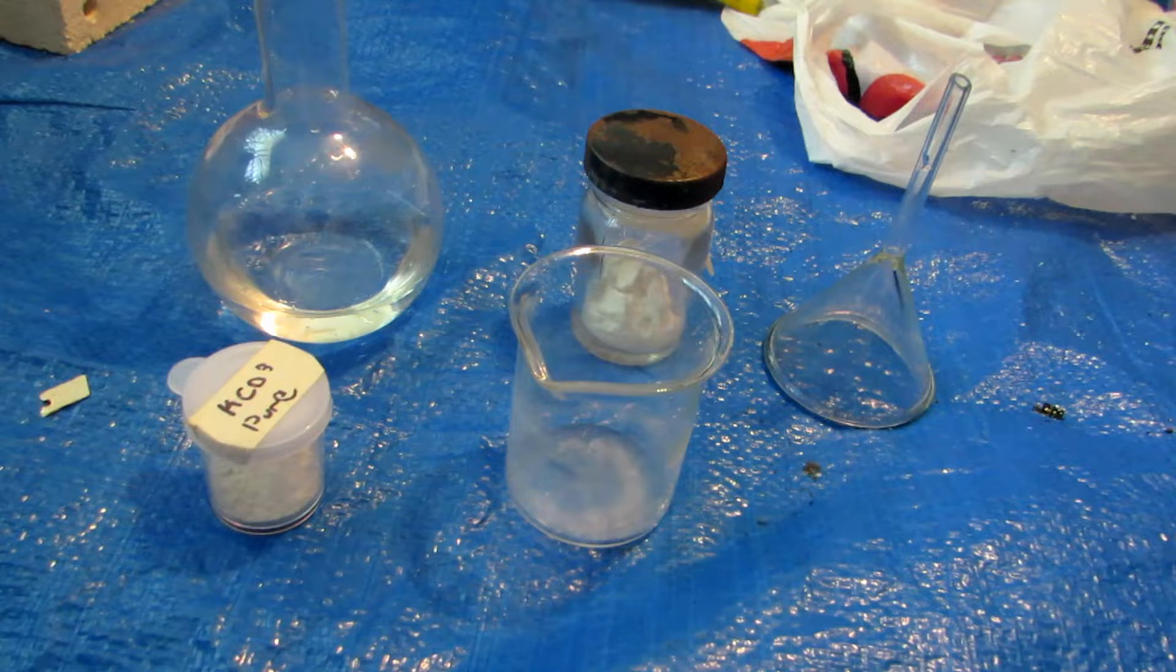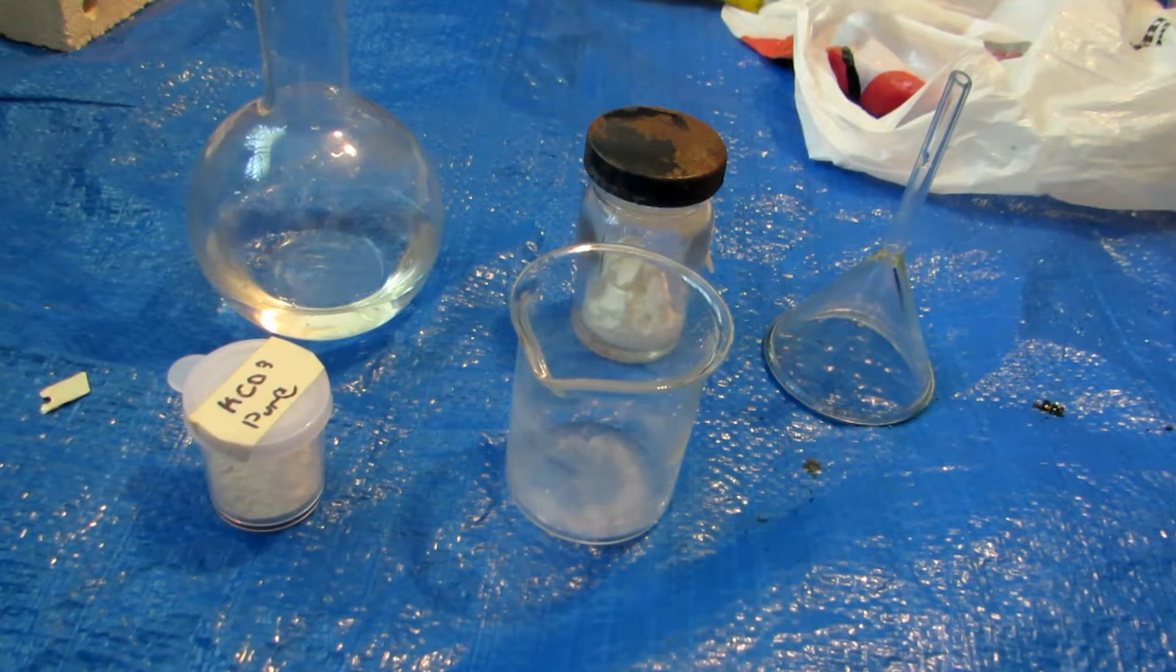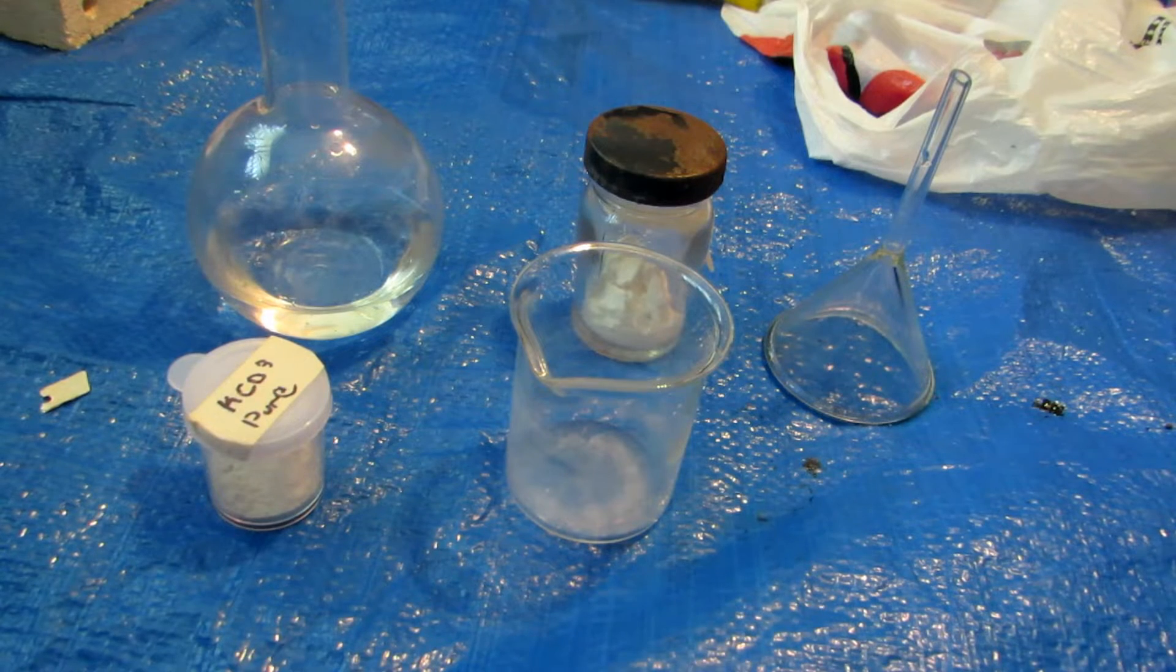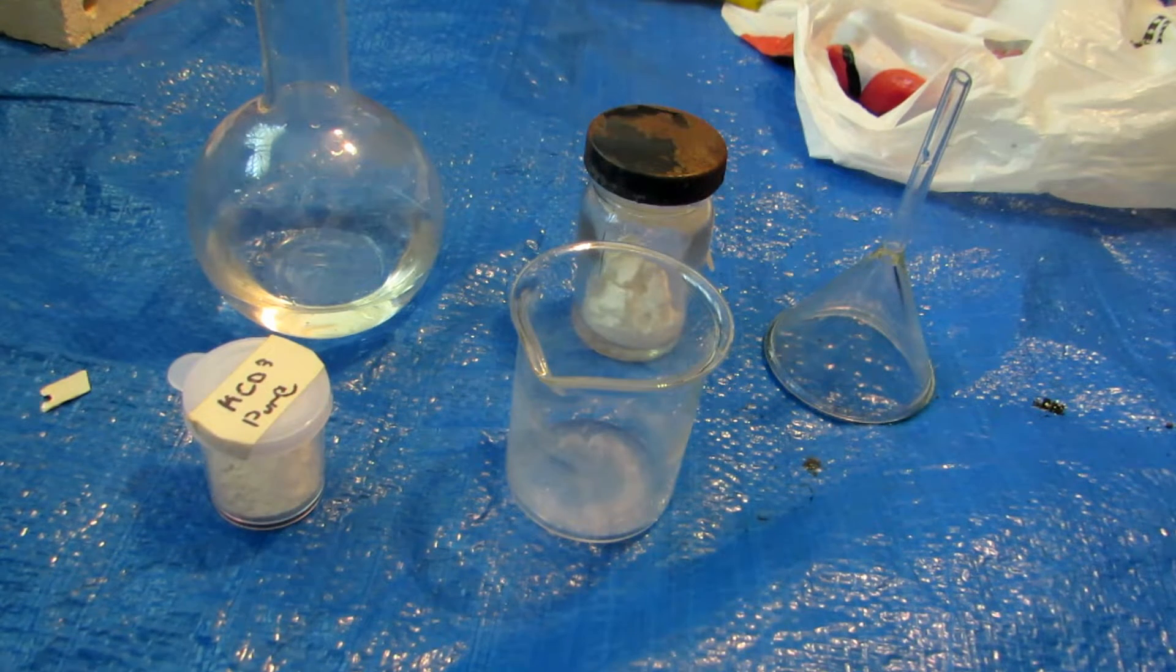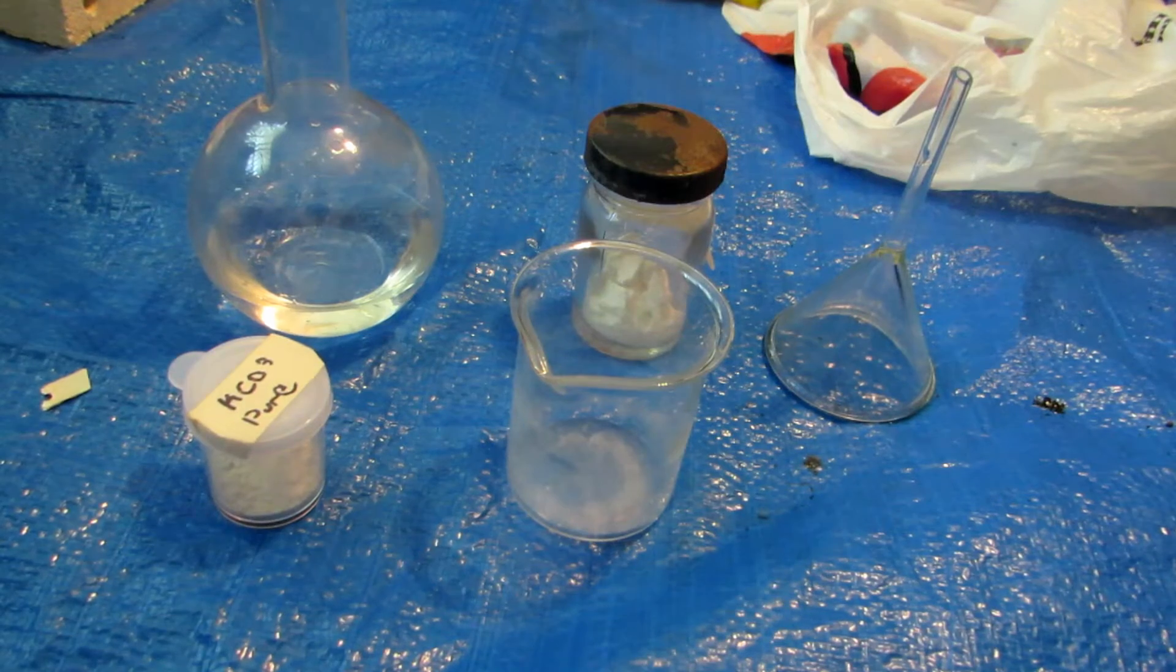Hey guys, welcome back to another video. So today we are going to be making a compound, potassium hydroxide, which is not easily available in all countries. In Canada, it's very difficult to find. You can buy it on eBay, but it's rather expensive, so I thought we'd go ahead and try to make our own.